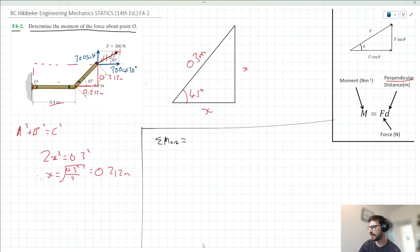So we can say then that the moment acting clockwise here is going to be this 0.212 meters here times 300 cos 30.